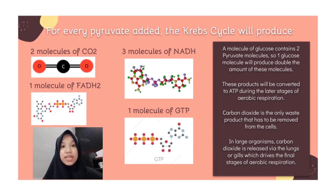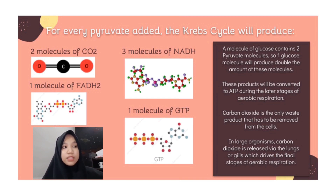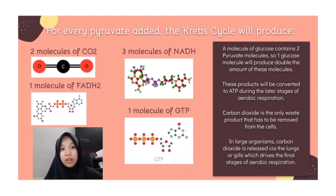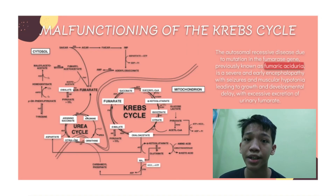Carbon dioxide must be removed from the cell. In large organisms, carbon dioxide is exchanged in the gills or lungs for oxygen, which helps drive the final stage of aerobic respiration.